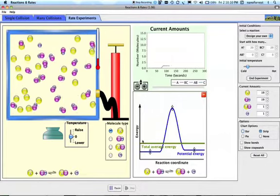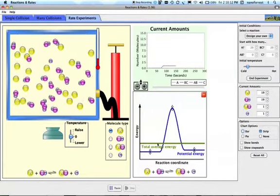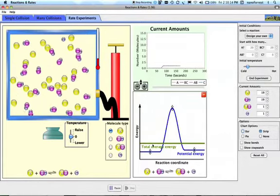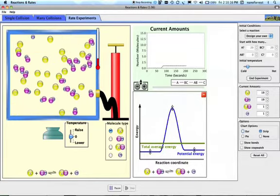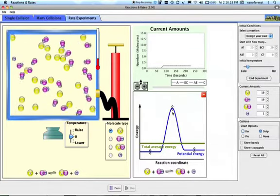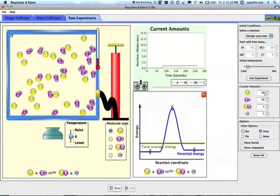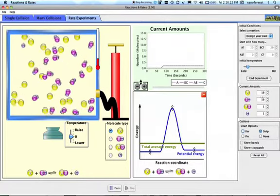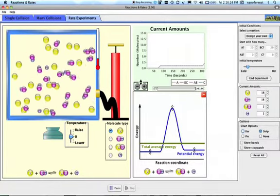Notice that I wouldn't expect a lot of reaction right away because my total average energy is actually below the activation energy. If I look at my current amounts, I can see one reacted, but not much has changed. Another one reacted, so I'm at 18 and 2.